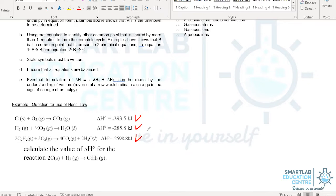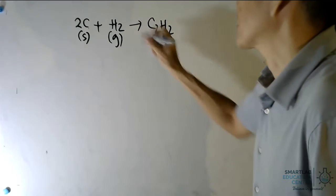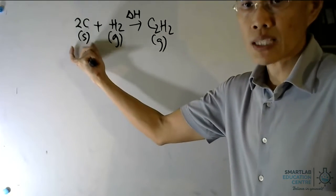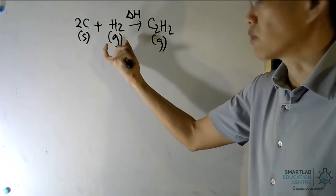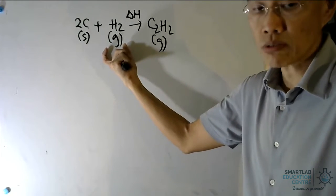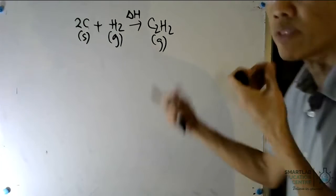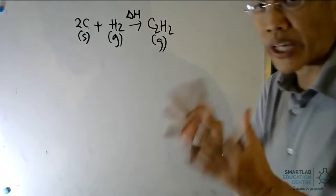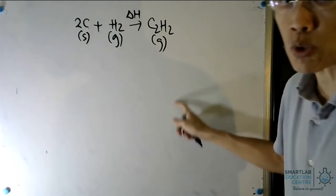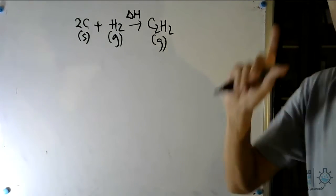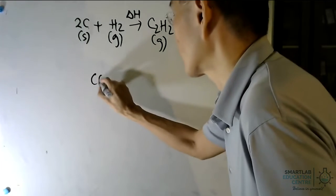Given three enthalpy changes, we use these values to determine the enthalpy change of a target equation. The data involves: burning carbon in oxygen, burning hydrogen in oxygen, and C2H2 reacting with oxygen to give carbon dioxide and water. When constructing an energy cycle, we look for what I term a common point — here it is the products of complete combustion.